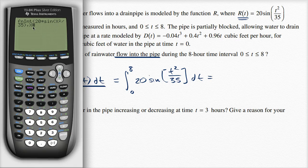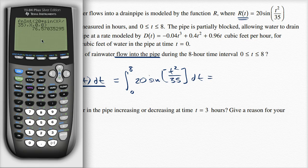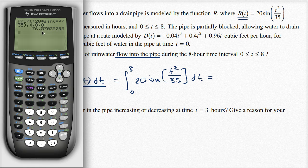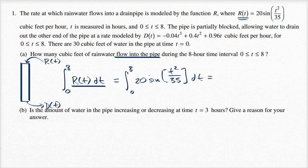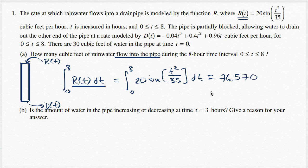Comma, my lower bound is zero, and my upper bound is eight. And close the parentheses, and then let the calculator munch on it a little bit. And we get 76.570. So this is approximately 76.570.